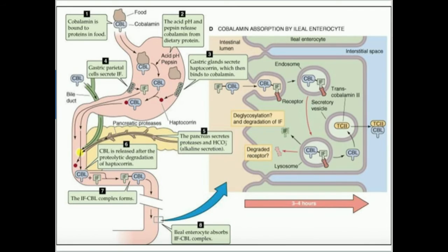Now intrinsic factor has a grip on cobalamin. As soon as the intrinsic factor-cobalamin complex forms, it keeps moving through the small intestine until reaching the ileum. The ileal enterocytes absorb the complex of intrinsic factor and B12. Intrinsic factor binds to a receptor, and the intrinsic factor-B12 complex is taken into the enterocyte through receptor-mediated endocytosis. Once the B12-intrinsic factor complex has been endocytosed into the cell, they are combined with a lysosome, and the lysosome breaks down the intrinsic factor. Now you have free cobalamin.